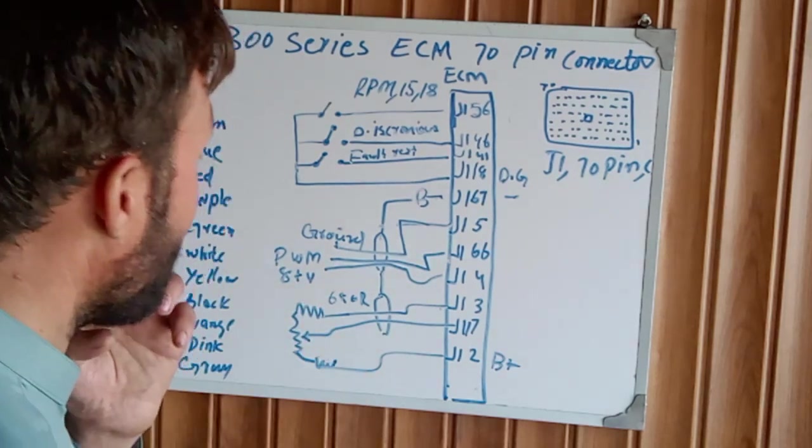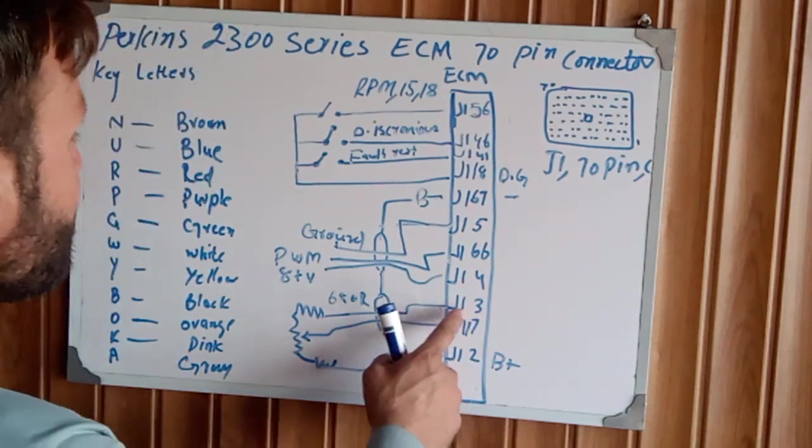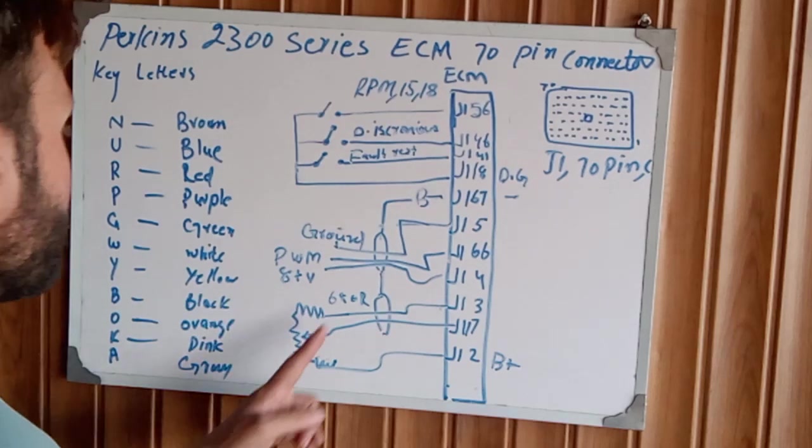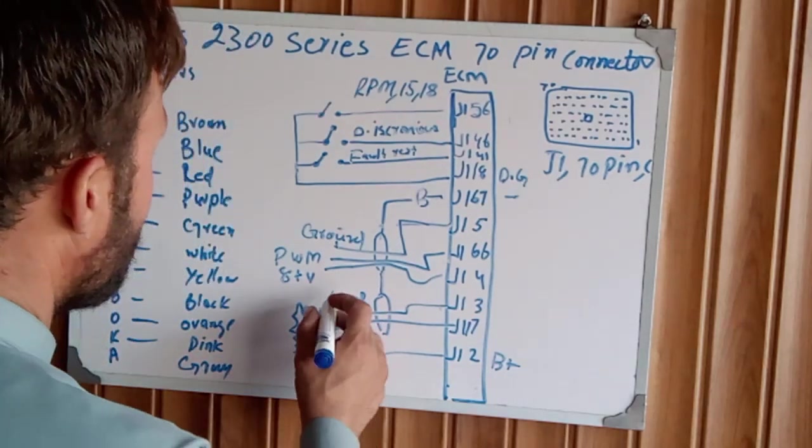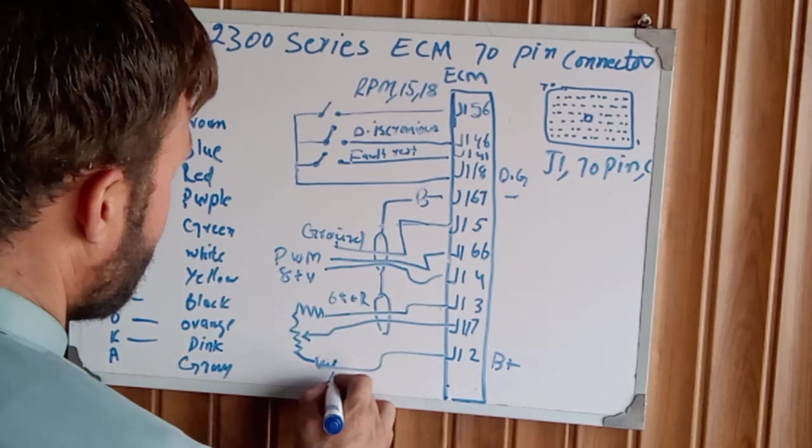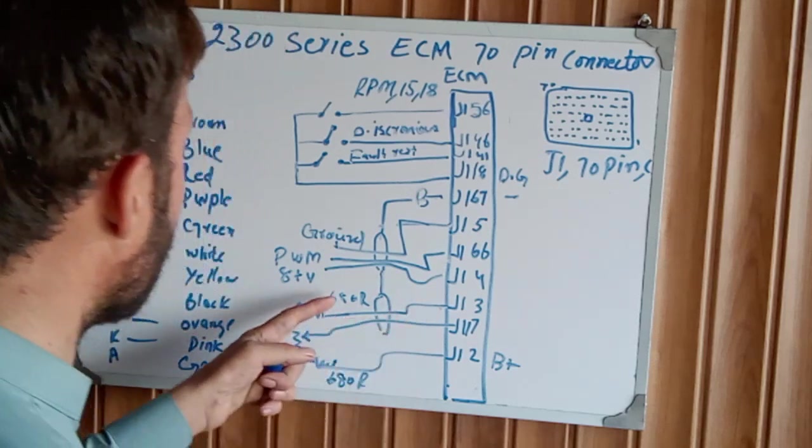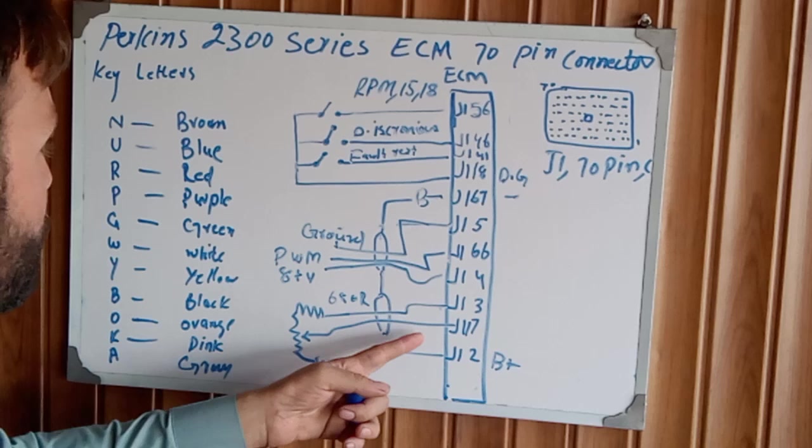After that, J1 13 number pin is coming out between this 680 ohm resistor and this 680 ohm resistor. Two resistors, this is the potentiometer actually, an adjustable potentiometer.